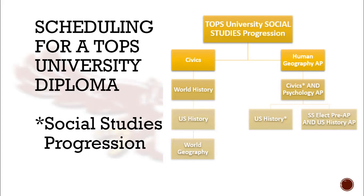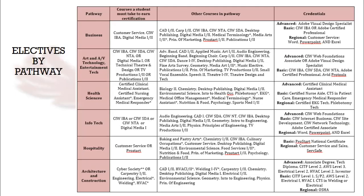Students may not take both Human Geography AP and World Geography to meet the 4 graduation requirements. Just about all students, no matter your grade level, have room in your schedule of 8 courses to take at least 1 elective. We have six pathways in which most of our electives lie.